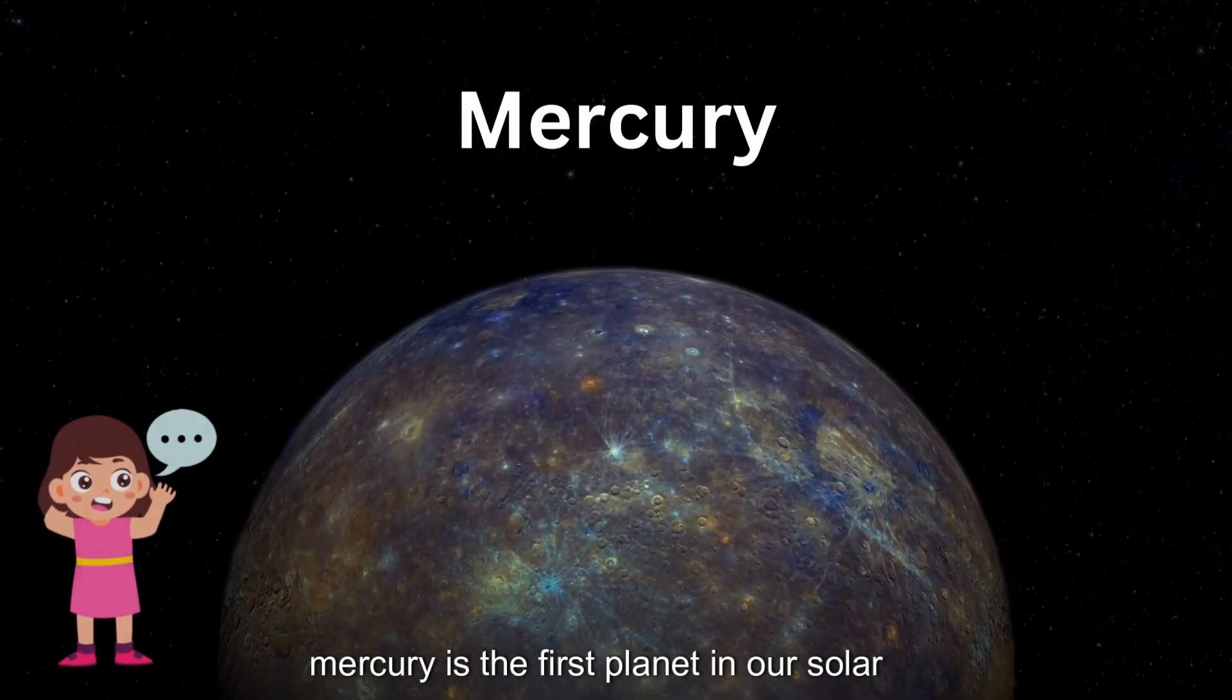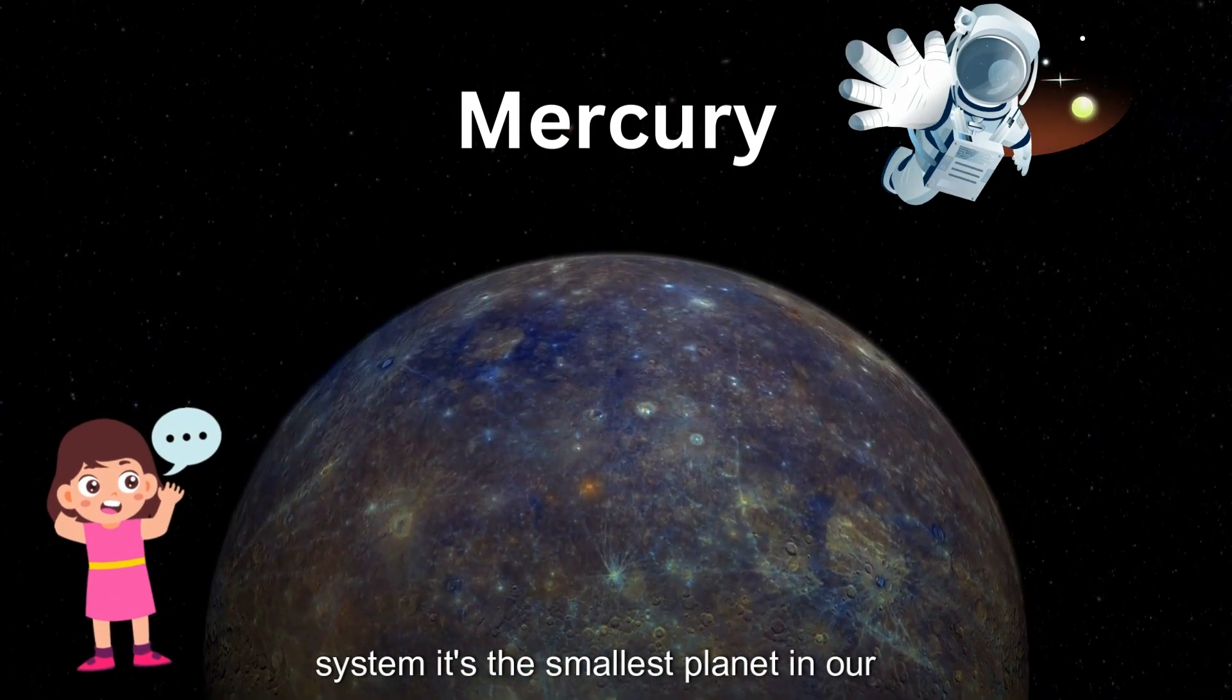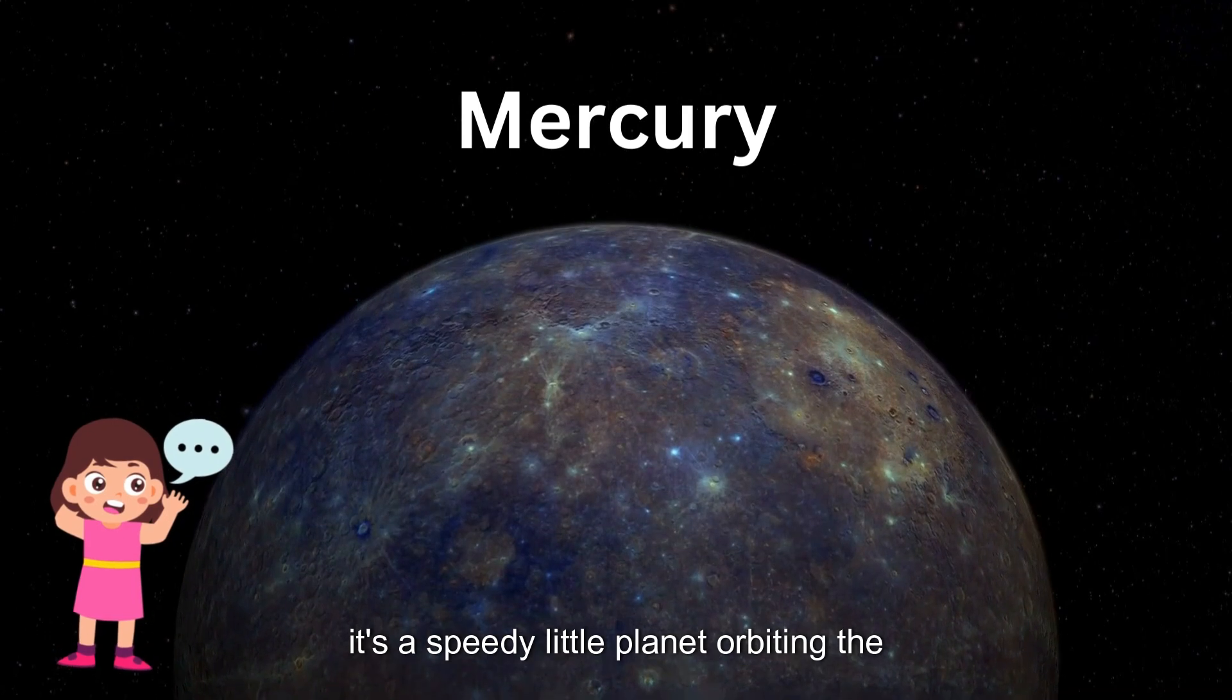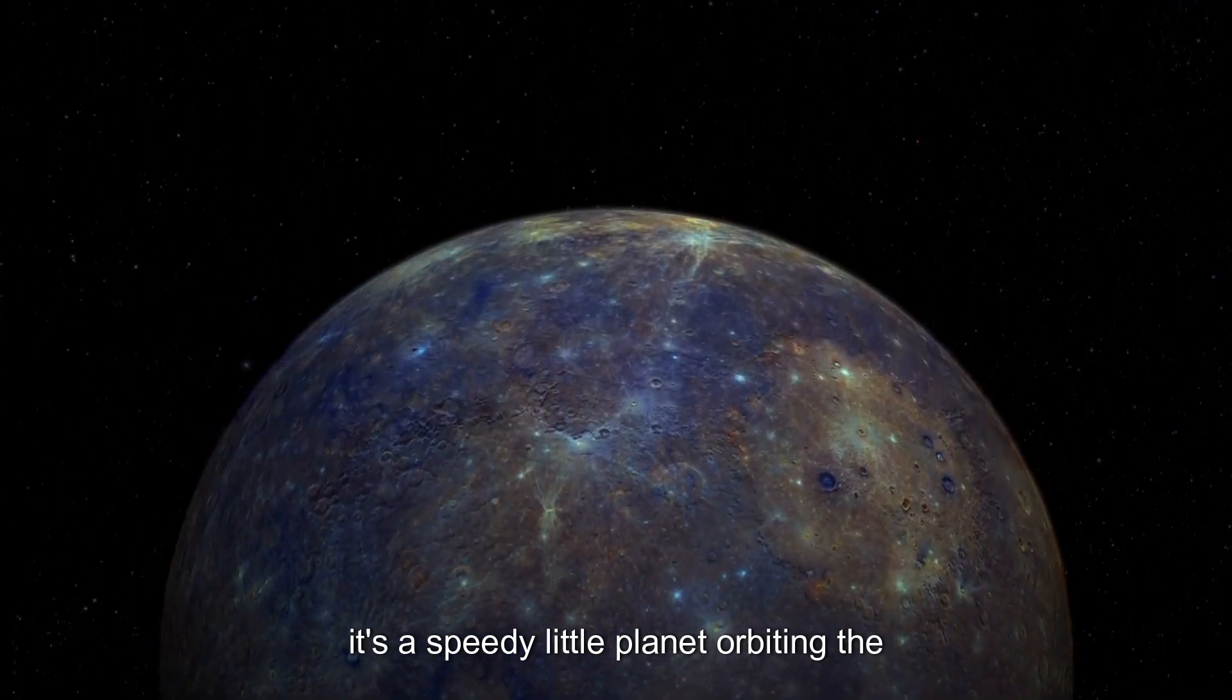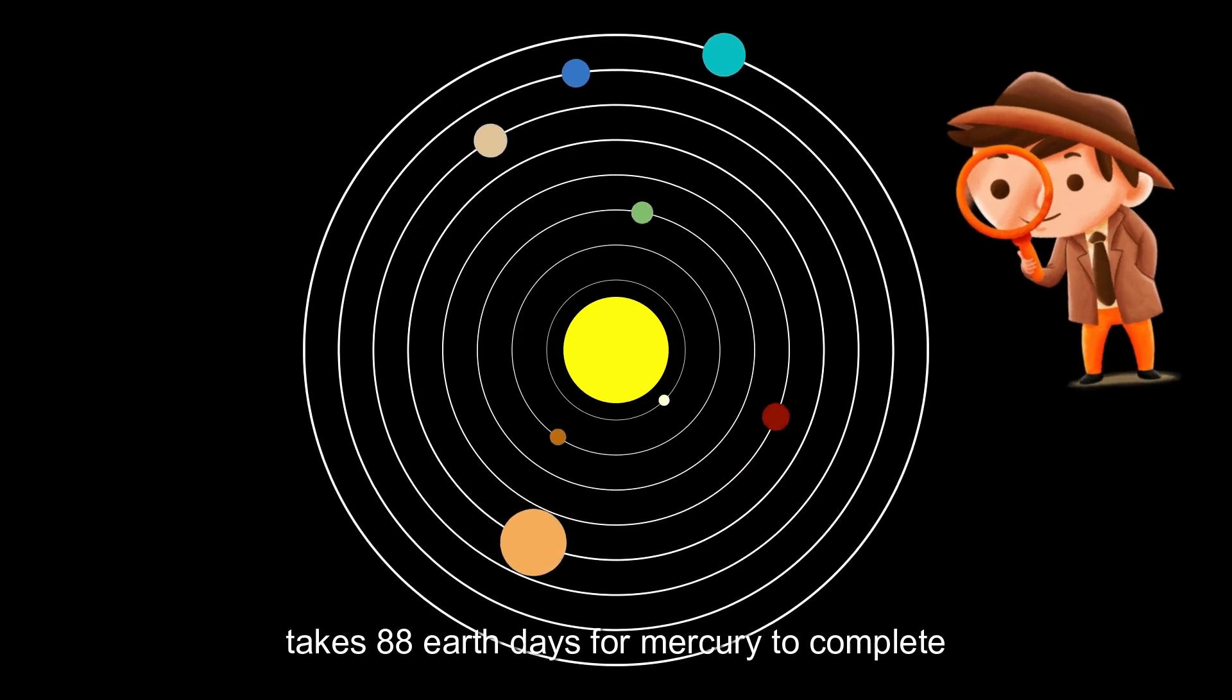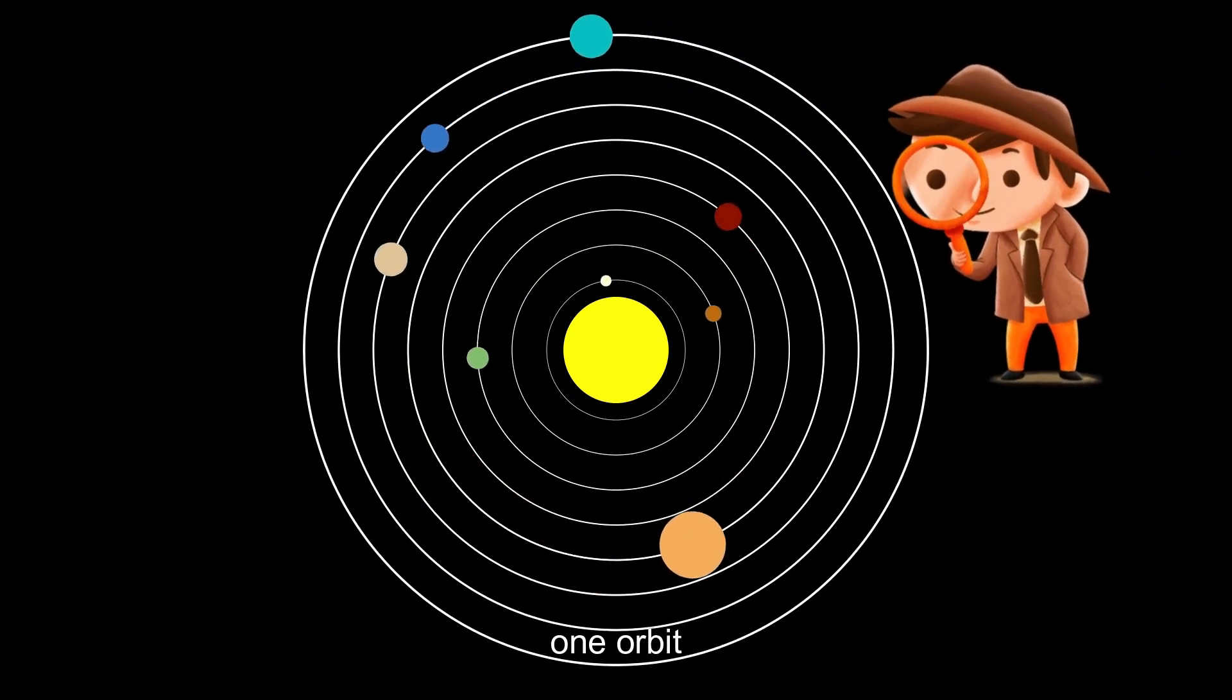Mercury is the first planet in our solar system. It's the smallest planet in our whole solar system, but it's a speedy little planet orbiting the Sun faster than any other planet. It only takes 88 Earth days for Mercury to complete one orbit.